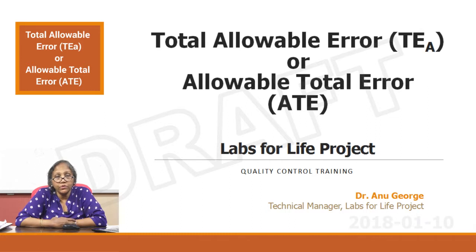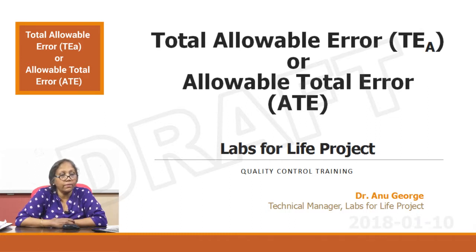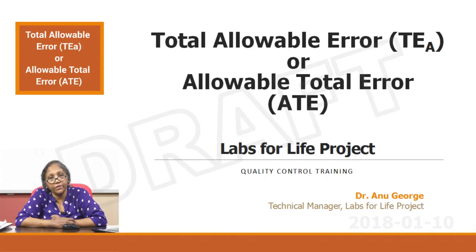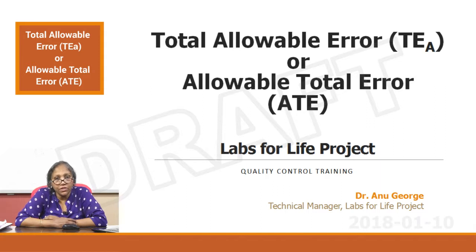Now that we know how to calculate the total error, we need to understand the purpose of why we have done all these exercises. Why did we quantify our imprecision, why did we quantify our bias, why did we have to do all that? Was not an LJ chart enough? Did it not give you enough information to monitor your system?